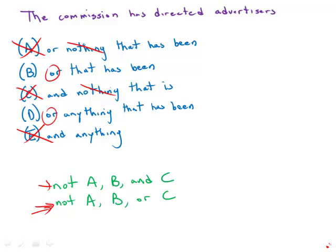And finally, answer choice B is kind of strange because it doesn't complete the parallelism correctly. We have a parallelism of foods that do not contain flavors, chemical preservatives, or 'that has been synthesized.' That doesn't complete the parallelism correctly. We need a noun there, not a modifying phrase. So answer choice D provides that noun: 'anything that has been synthesized.'